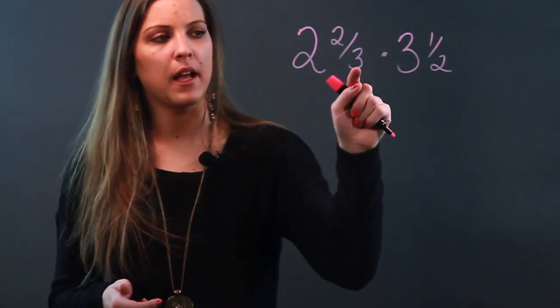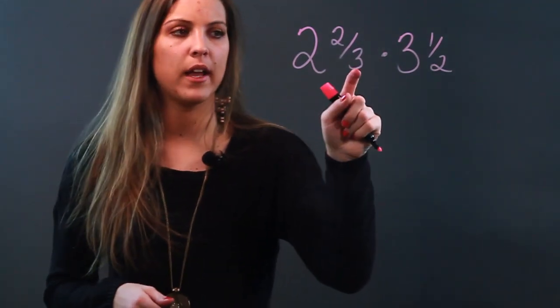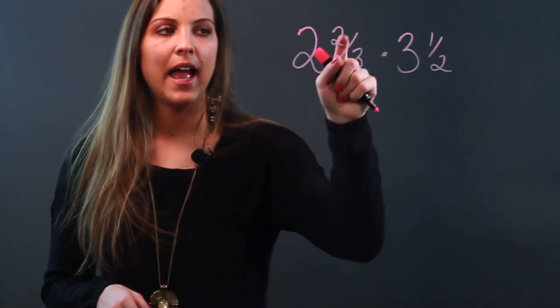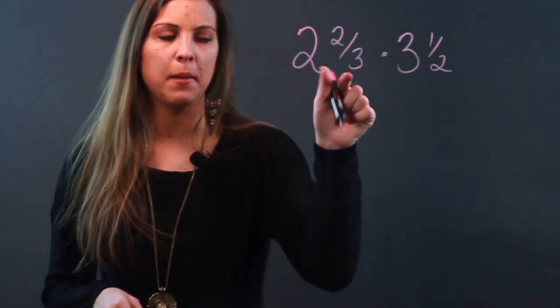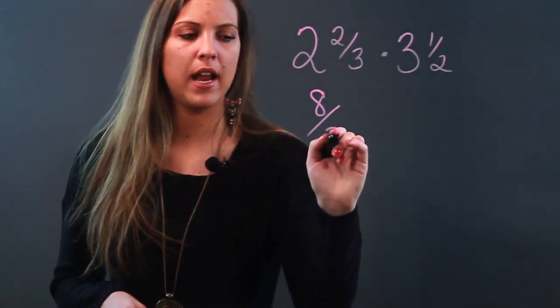And the way that we do that is we multiply the denominator by the whole number. So we have 2 times 3 is 6. Add that to the numerator—that's 8—and put it over the denominator. So that became 8/3.